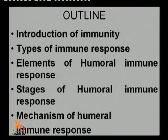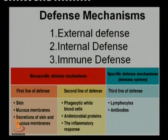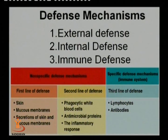Immunity can be divided into various types: first, natural immunity; second, acquired immunity. There are three defense mechanisms: the external defense mechanism, the internal defense mechanism, and the immune defense mechanism. The first line defense involves certain physiological barriers including skin, mucosal membranes, and certain secretions like perspiration. The second line defense involves non-specific immunological cells including phagocytic cells, antimicrobial peptides, and inflammatory immune response.